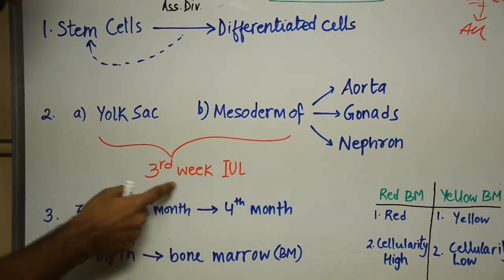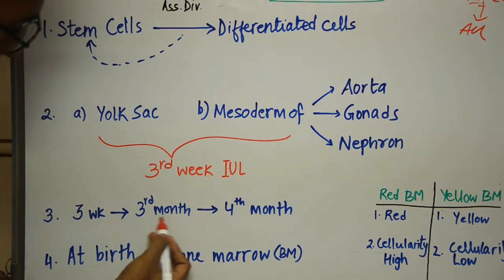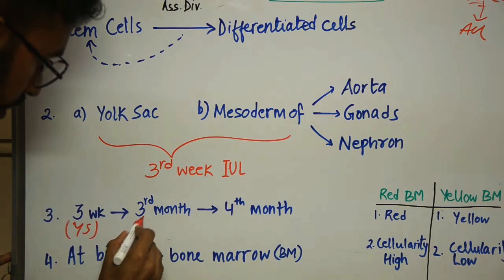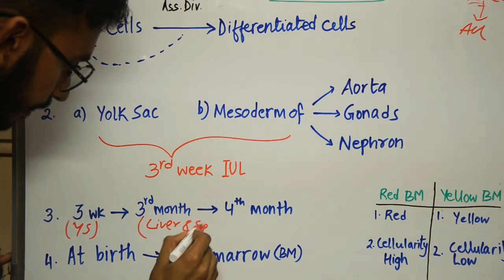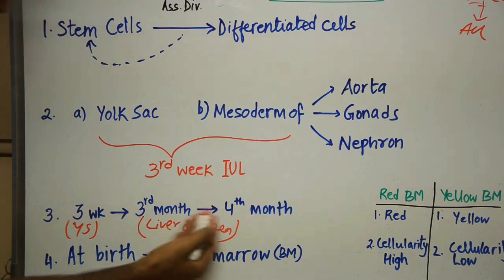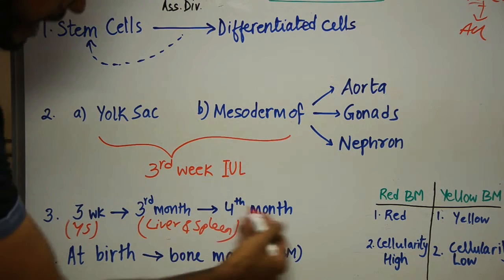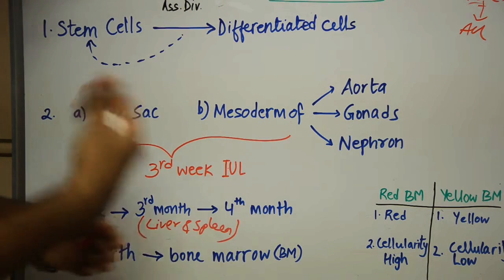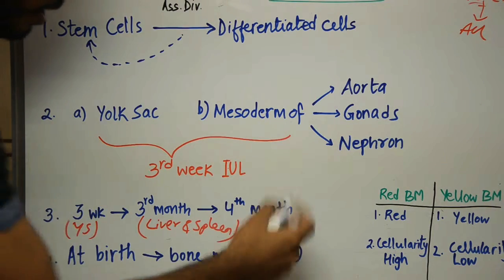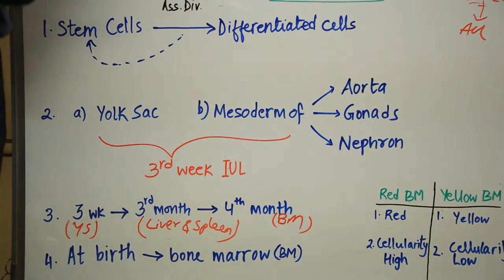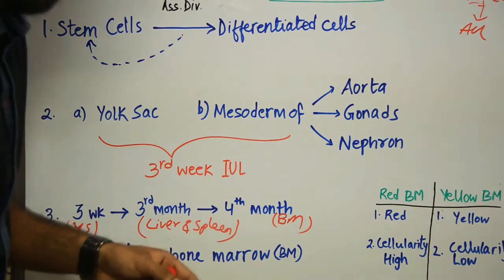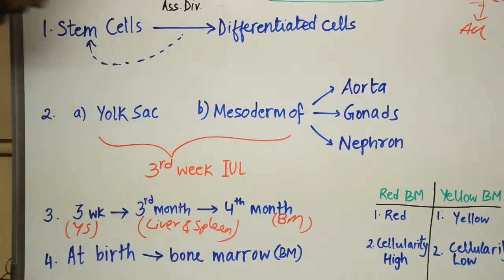On the timeline: hemopoiesis begins in the yolk sac at the third week. At about the third month of intrauterine life, pluripotent stem cells migrate from the yolk sac to the liver and spleen, which then show hemopoietic activity. At about the fourth month (some books say 20 weeks or fifth month), the pluripotent stem cells reach the bone marrow. The bone marrow showing hemopoiesis is called red bone marrow; the bone marrow not showing hemopoiesis is called yellow bone marrow.